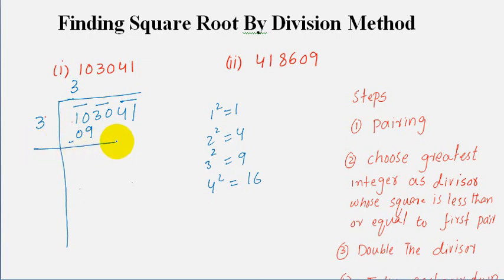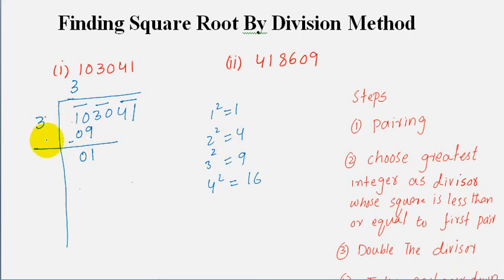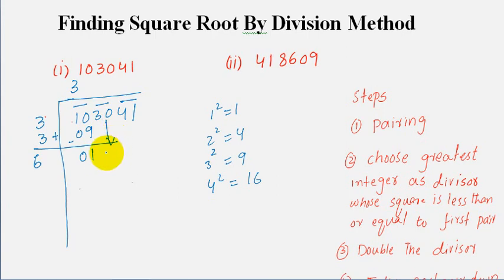Step three: double the divisor. We double 3 by adding 3 to get 6 as our new divisor. Now 6 is greater than 1, so we take the next pair down, which is 30. Our new dividend is now 130.